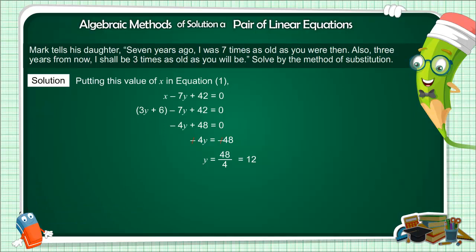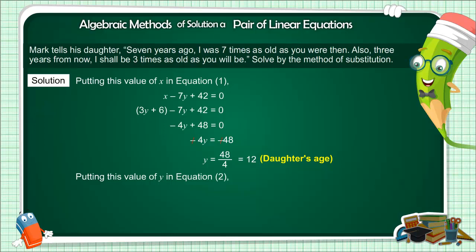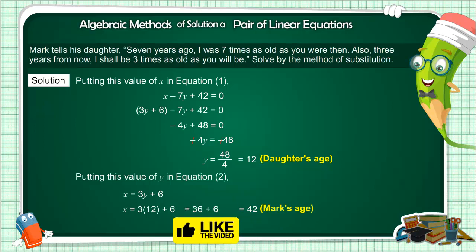This means the daughter's current age is 12 years. Now putting the value of y into the second equation: x equals 3 into 12 plus 6, that is 36 plus 6, which equals 42. So today Amar's age is 42 years.